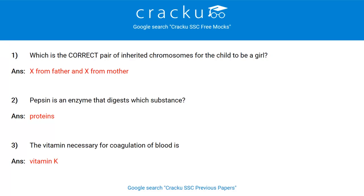Today's first question: Which is the correct pair of inherited chromosomes for the child to be a girl? X from father and X from mother. Pepsin is an enzyme that digests which substance? Protein. The vitamin necessary for coagulation of blood is Vitamin K.